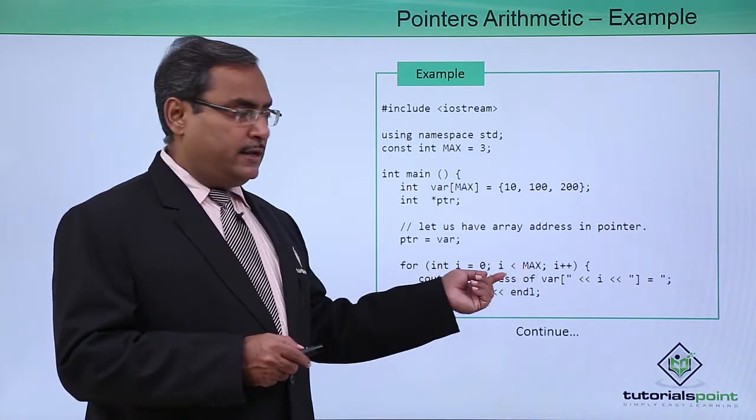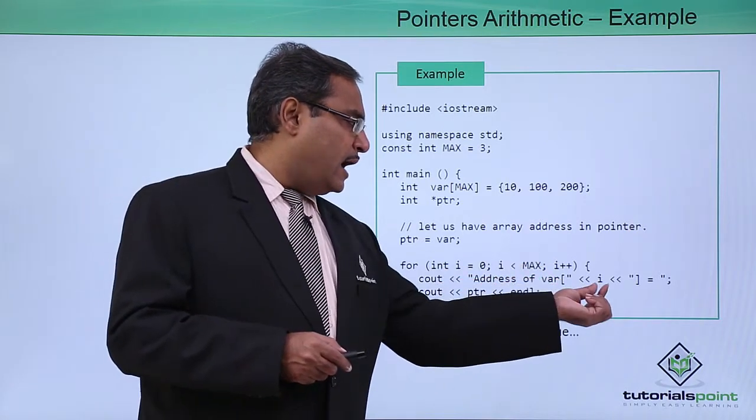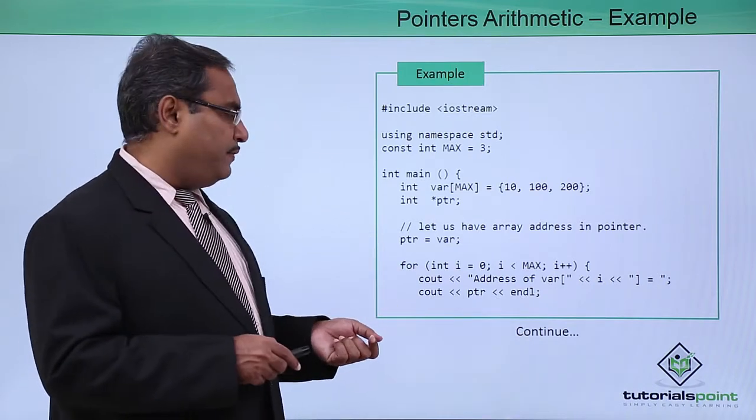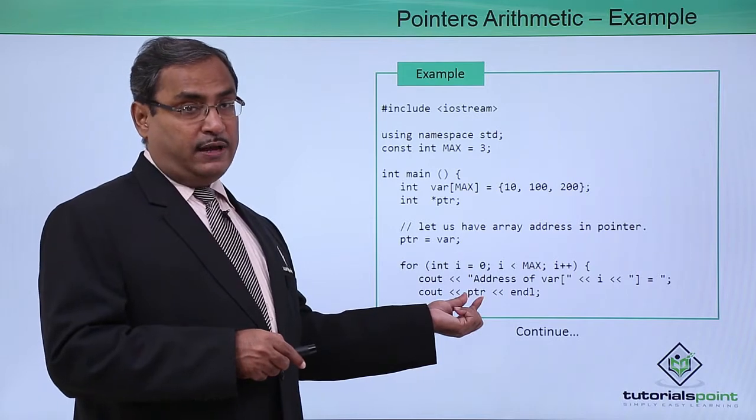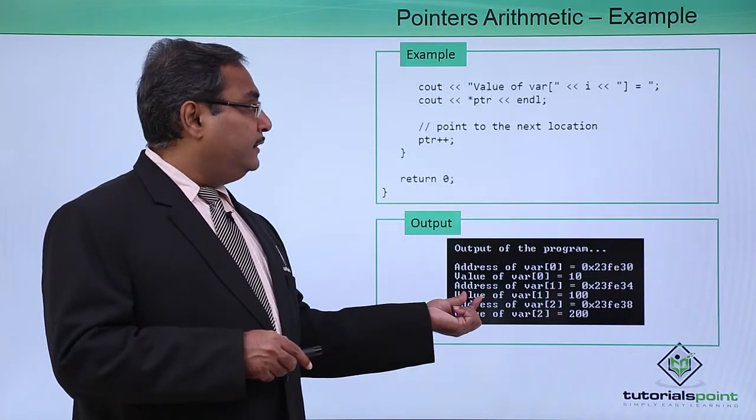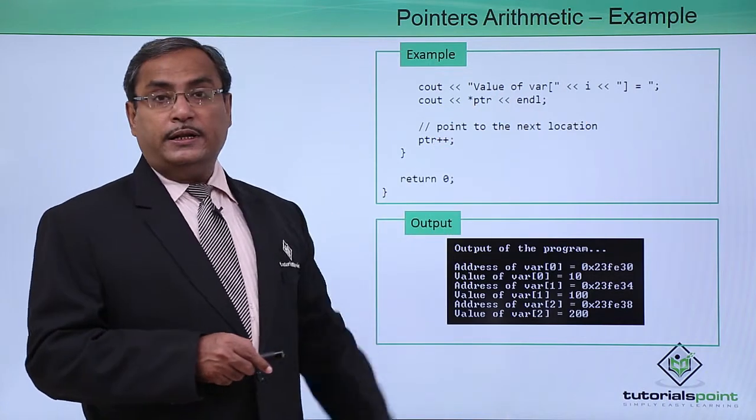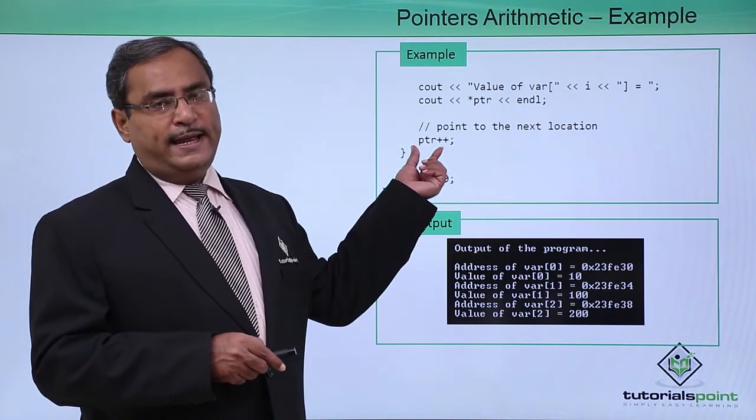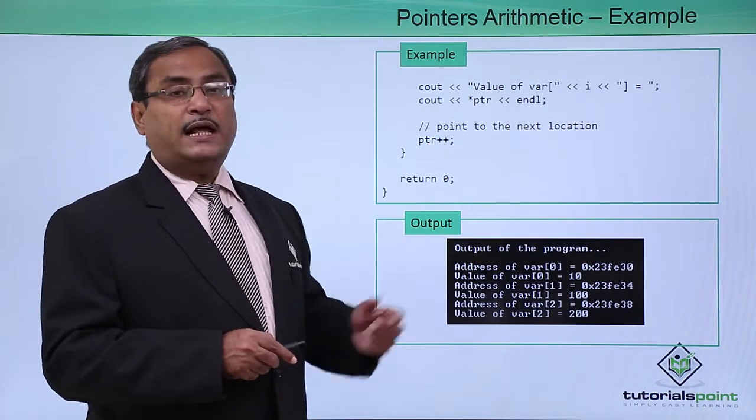With i plus plus, we are going to print var[i], then i, then we print PTR (the address), then i again, and then the content of PTR. Each and every time within this for loop we are increasing PTR by 1 using plus plus.